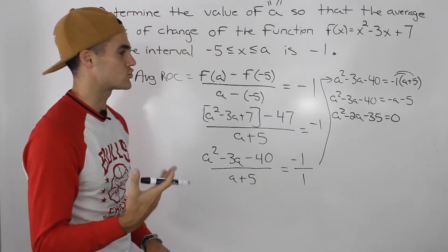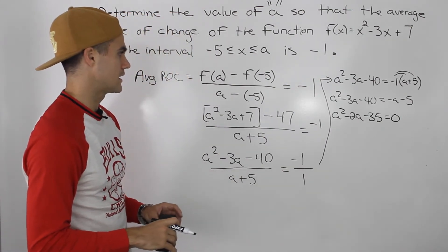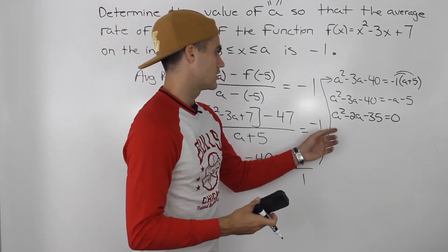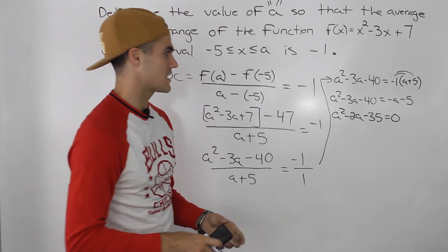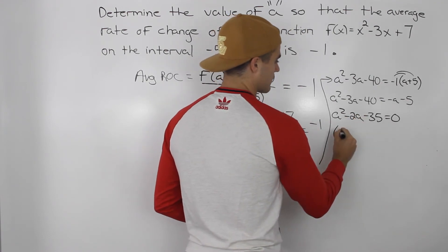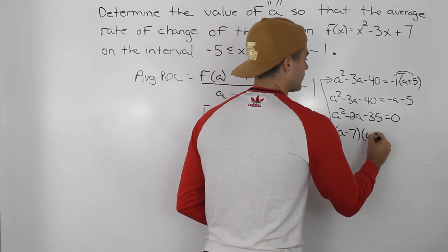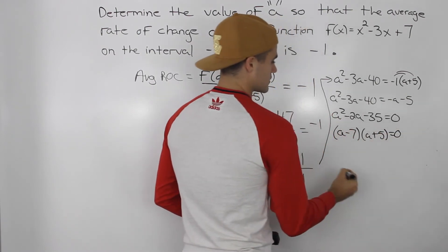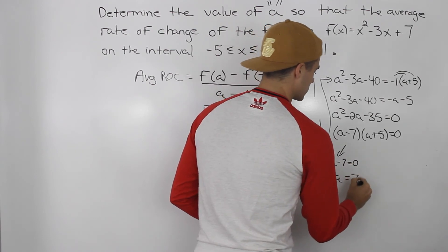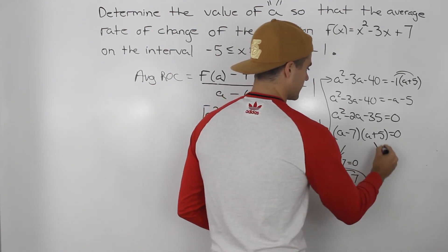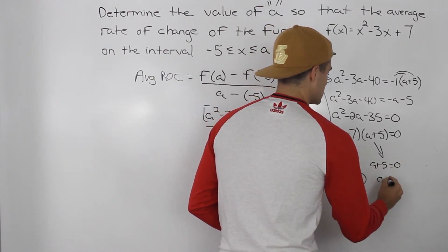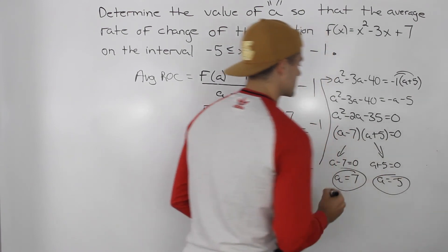Now we have a quadratic equation. We can use the quadratic formula or we can factor — notice how this factors smoothly. a² - 2a - 35 factors into (a - 7)(a + 5). So either a - 7 = 0, giving a = 7, or a + 5 = 0, giving a = negative 5.